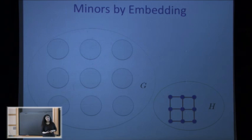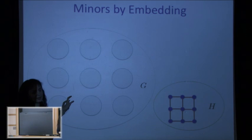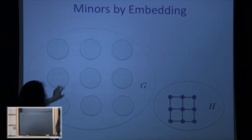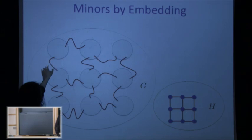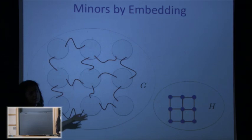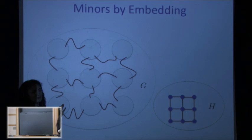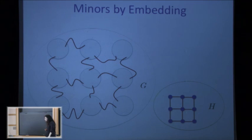As a computer scientist, I like to think about this as an embedding: every vertex of the grid is embedded as some connected cluster, these clusters have to be disjoint, and every edge is embedded as some path connecting these clusters. All these paths have to be disjoint and internally disjoint from the clusters. This is exactly the same as saying the graph contains a grid minor, and it's perhaps easier to visualize — there is a grid sitting inside.